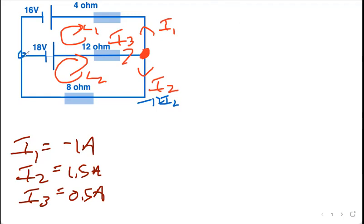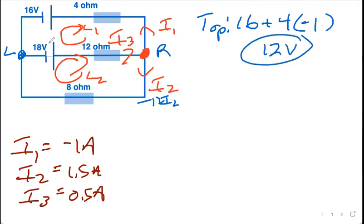Going from the left junction to the right junction going across the top wire, here we go. Going up, I'm going to go through a battery and then a resistor. So I'm going to go through the battery, I'm going to gain 16. Then I'm going against i1, so I'm going to gain 4 times i1, which is 4 times negative 1. That will give you 12 volts of potential from left to right.